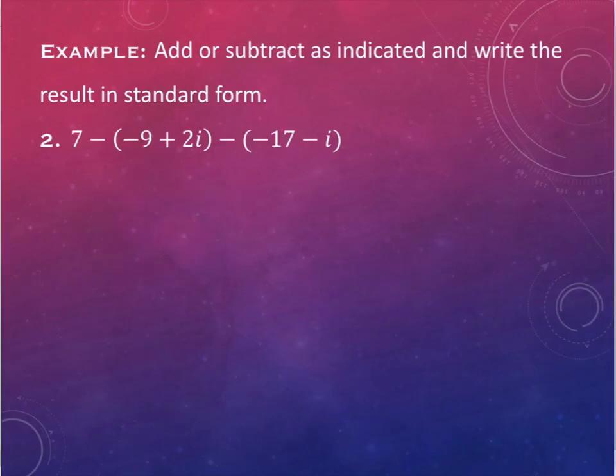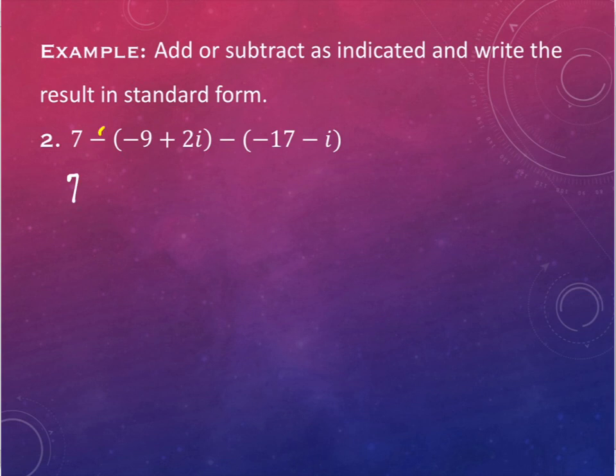This one's a little bit messier just because there's more pieces and because there's some negatives involved. So you do want to take a moment to distribute those negatives and make sure you switch signs, because sign errors will definitely pop up as an error in MyMathLab. So this negative right here will get distributed through to each piece, so I end up with a positive 9 and a negative 2i.